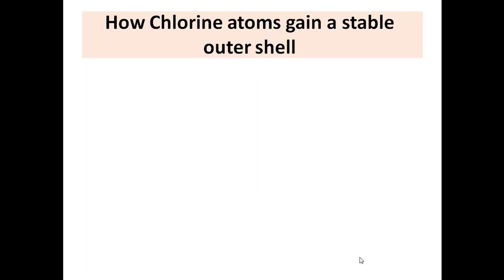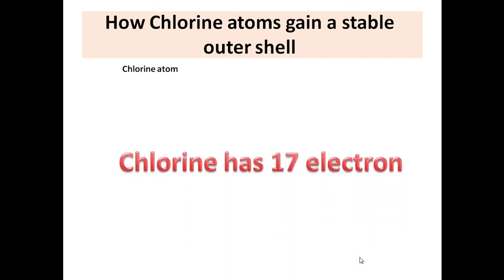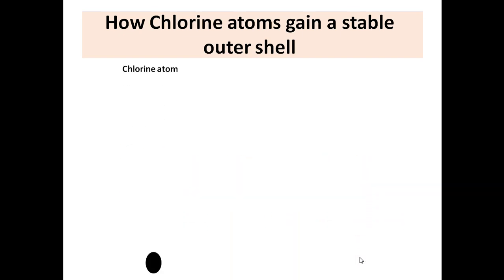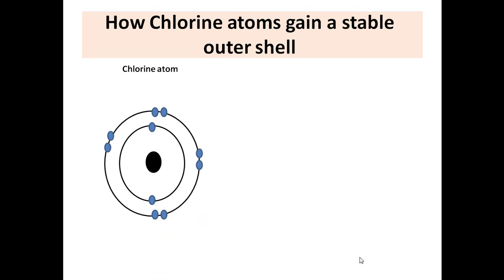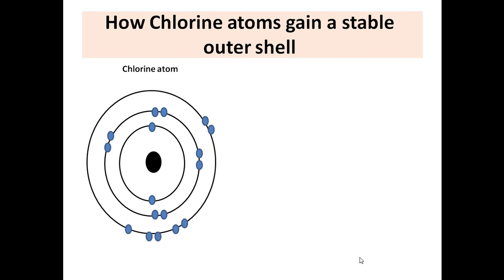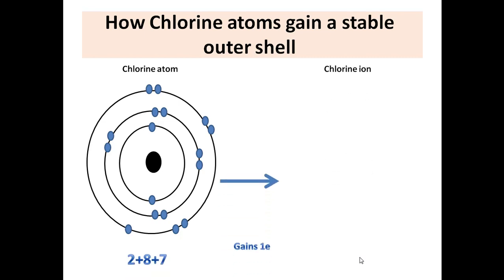How does the chlorine atom gain a stable outer shell? Chlorine has 17 electrons. If we distribute them in shells — two electrons in the first shell, eight electrons in the second shell, and seven electrons in the third shell. The outer shell is not stable with only seven electrons, so this atom will fight to become stable by gaining one electron from another atom.